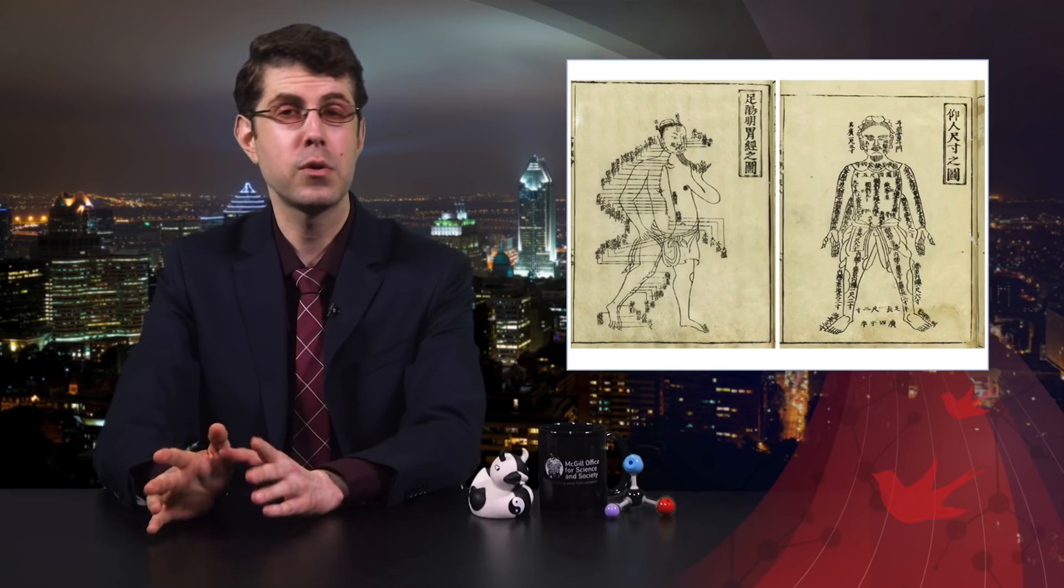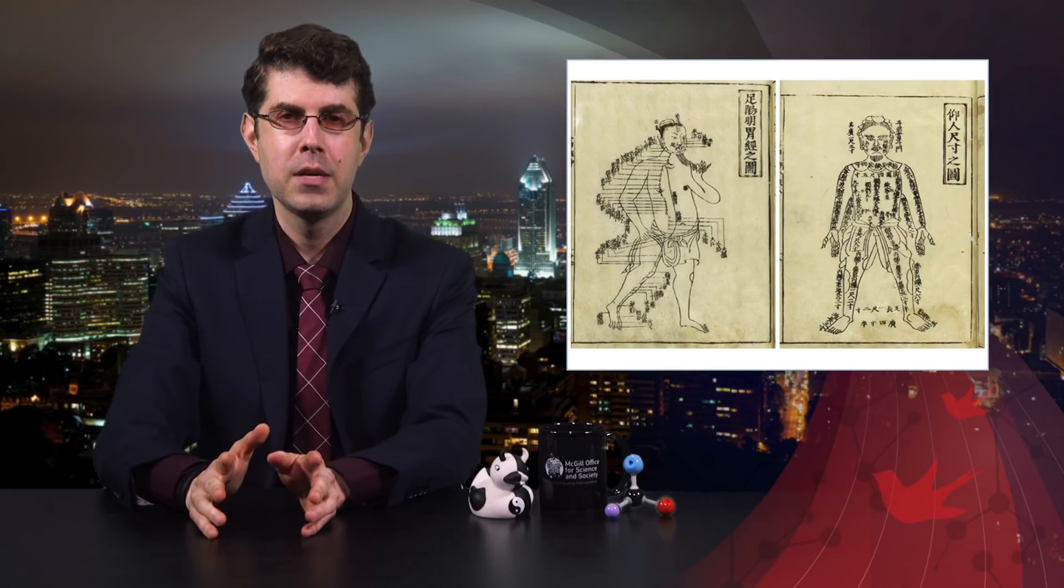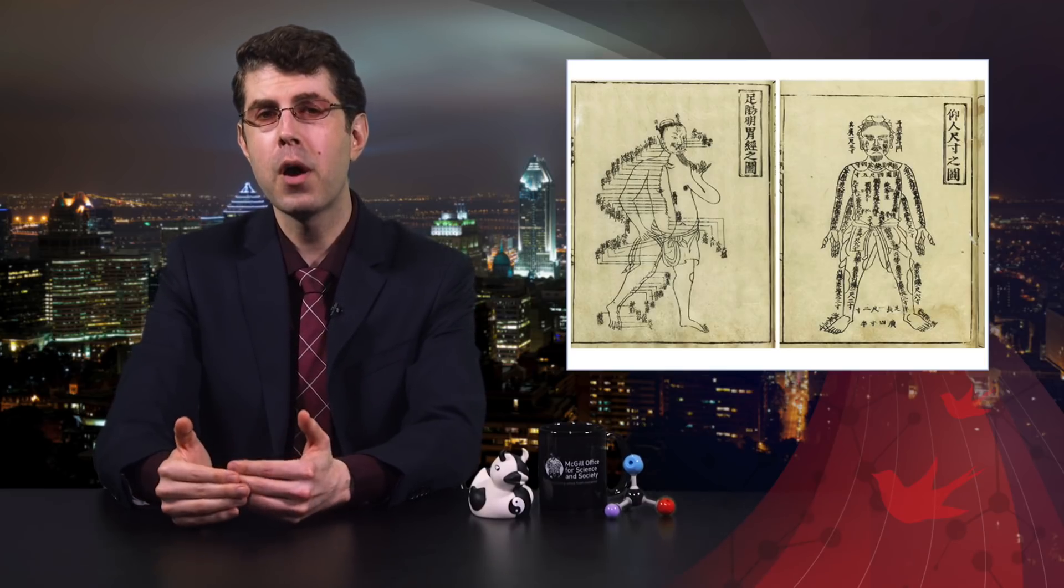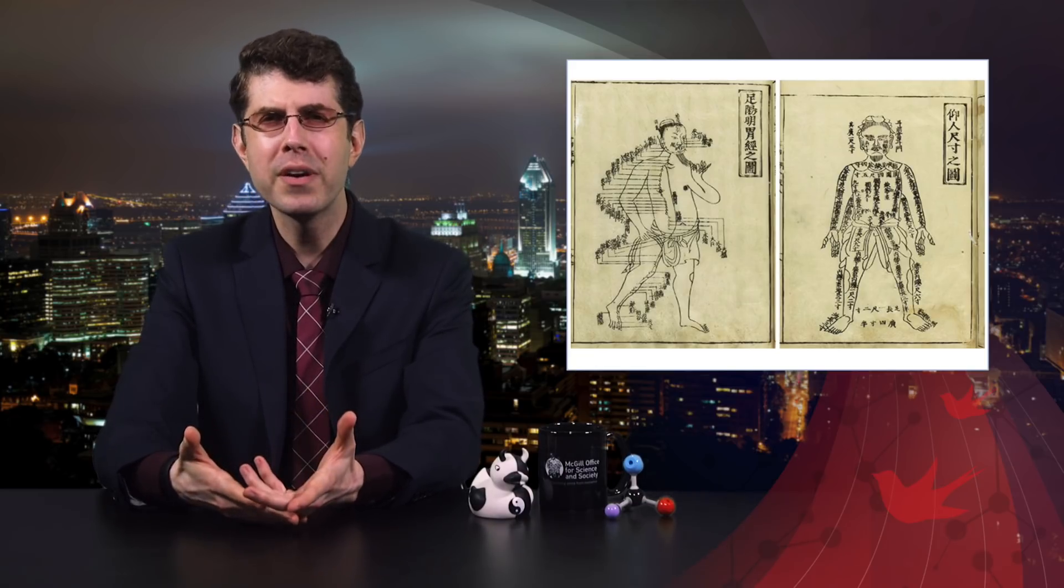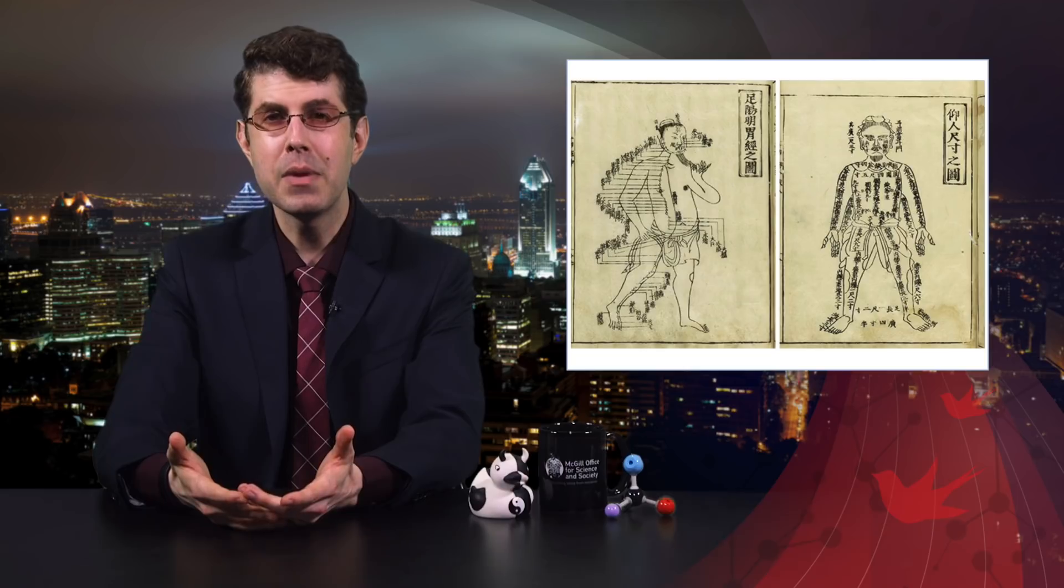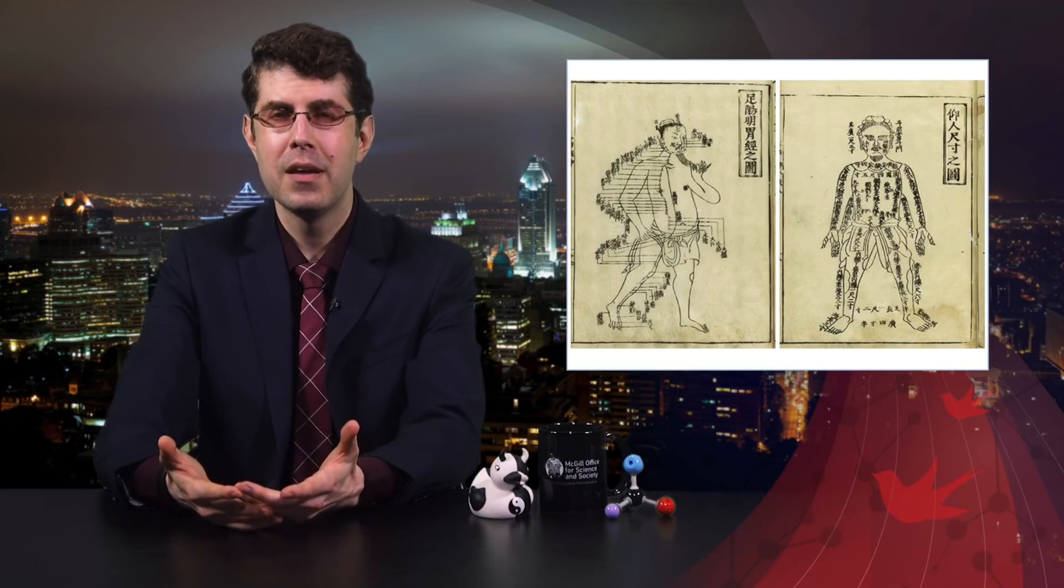The ancient Chinese either prohibited dissections, or at the very least discouraged them, so that they didn't know much about what the human body looked like on the inside. Meridians, acupuncture points, these are not based on anatomy because they didn't know anatomy. They were guessing.